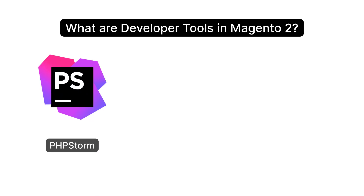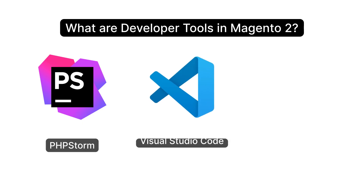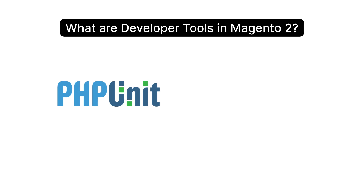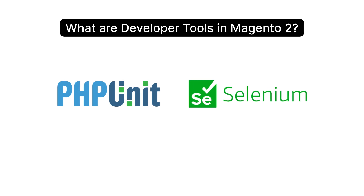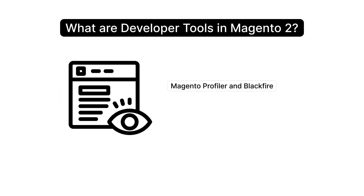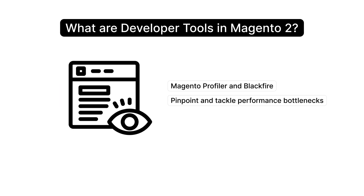Discover how using PHPStorm, Visual Studio Code, or Sublime Text can benefit your Magento development. Learn how PHPUnit and Selenium can automate your testing process, saving time and ensuring top-notch quality. Utilize Magento Profiler and Blackfire to pinpoint and tackle performance bottlenecks.